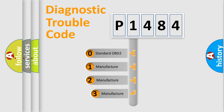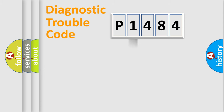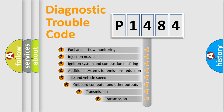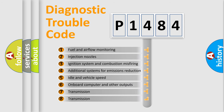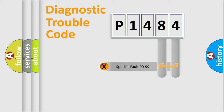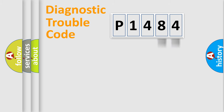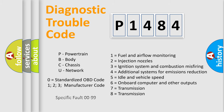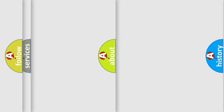If the second character is expressed as zero, it is a standardized error. In the case of numbers 1, 2, or 3, it is a more specific expression of a car-specific error. The third character specifies a subset of errors. This distribution is valid only for the standardized DTC code, where the second character is expressed by the number zero. Only the last two characters define the specific fault of the group.